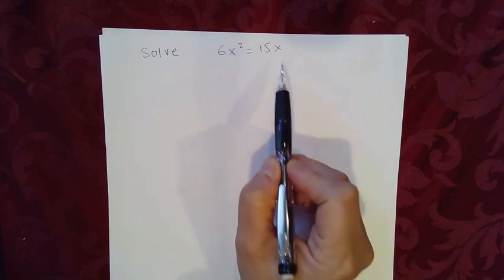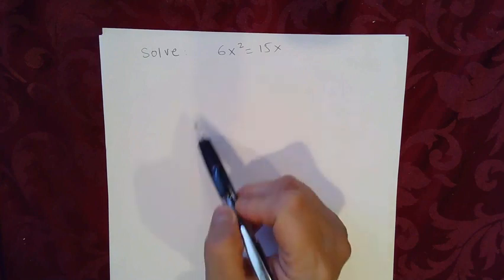Since this is a quadratic equation, we need to take everything on one side. One side must be equal to 0.